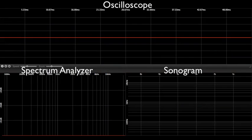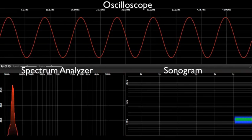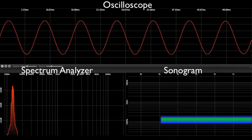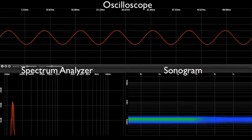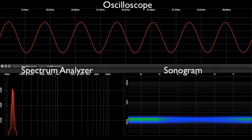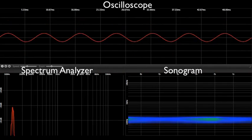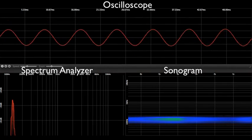I hope this demonstration has helped to show how these three parameters of sound, amplitude, frequency, and timbre, interact and are displayed on these three different displays. Let's review. If I play a note at a single frequency, which is a sine wave, and I change its amplitude, we see it as a vertical change on the oscilloscope, we see it as a vertical change on the spectrum analyzer, and we see it as a color change in the sonogram display.